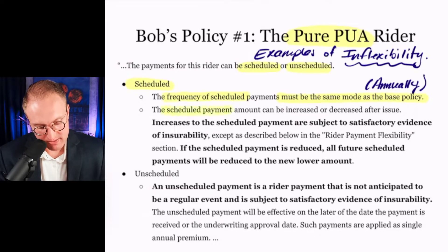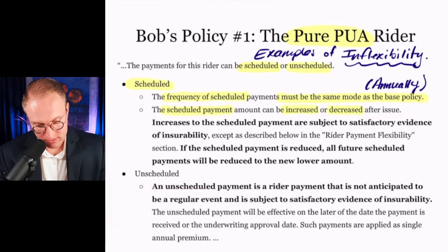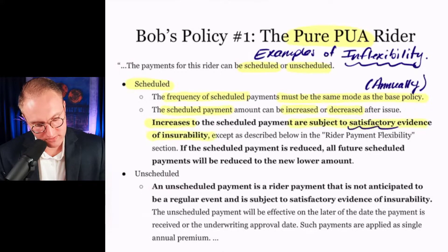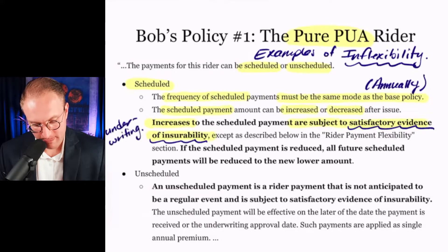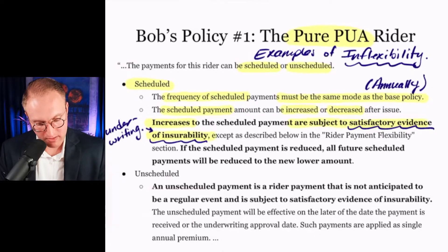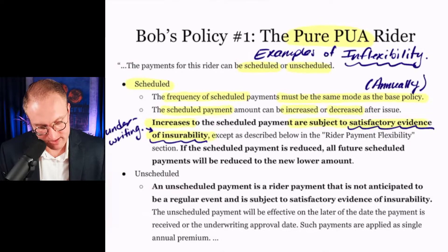If I paid my base premium monthly, it'd be payable on a monthly basis. So we have some restrictions about when Bob can make his PUA payments. The scheduled payments can be increased or decreased after issue — meaning once the policy is in force. However, increases are subject to satisfactory evidence of insurability. That is code for underwriting — the company can tell you whether they're going to let you make the payment or not.